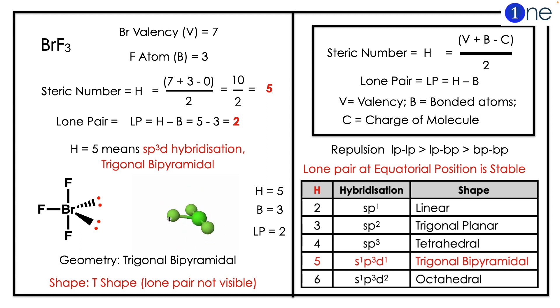So H=5 means sp3d hybridization with trigonal bipyramidal structure with two lone pairs. The lone pairs are very small because they're electrons and are not visible, so the real structure will be T-shaped.